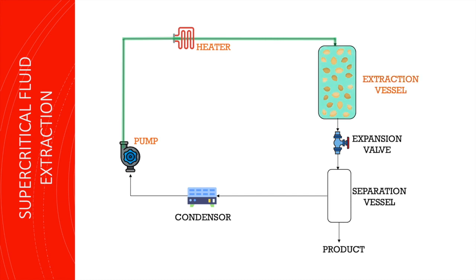Fourth step, the supercritical carbon dioxide carries the seed oil out of the extraction vessel and goes through an expansion valve where it is depressurized upon entering the separator.